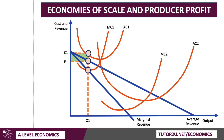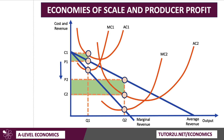Let's put the marginal cost in there as well — MC2 goes with AC2. Now a profit maximizing firm would produce output Q2 where MC meets MR. Take it up to the demand curve to show the price; they can charge price P2. So you can see straight away that economies of scale lead to a fall in the profit maximizing price from P1 to P2. The unit cost has come down and at Q2 there's the average cost C2.